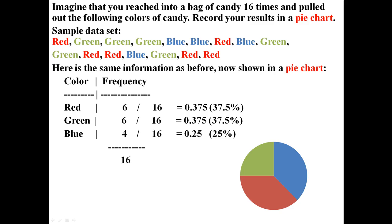So back to the candy example. Here's the same information as before, now shown in a pie chart. You can see that about 37.5% is given to red. 37.5% is given to green. And the other 25% is left over to blue.